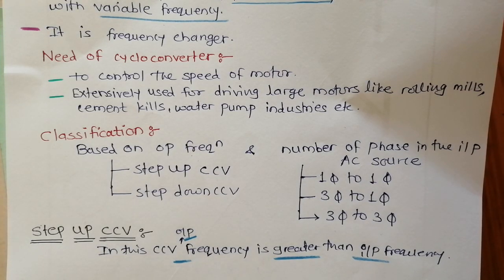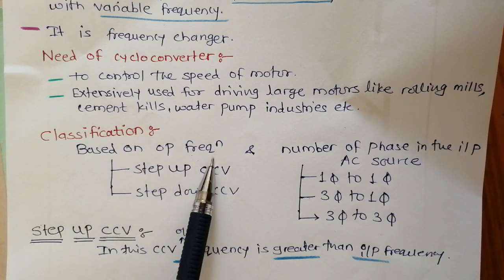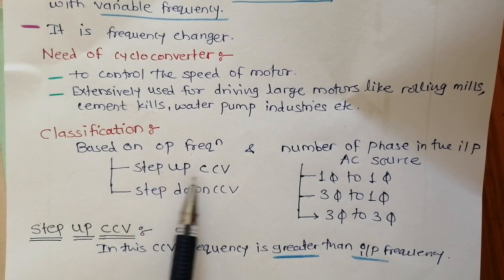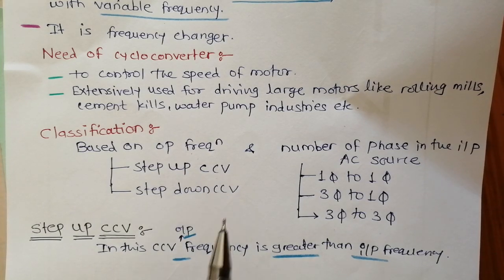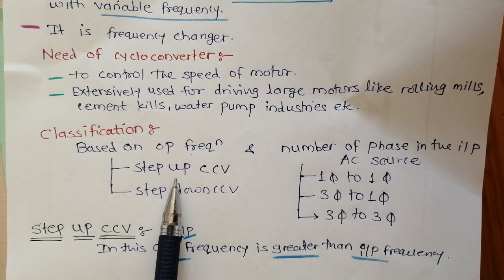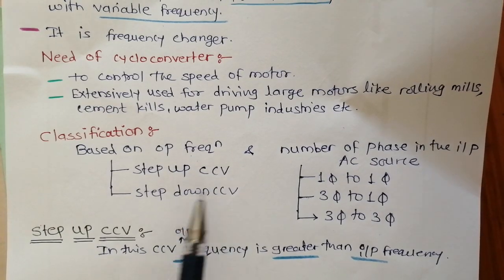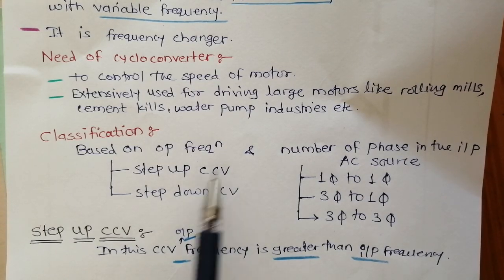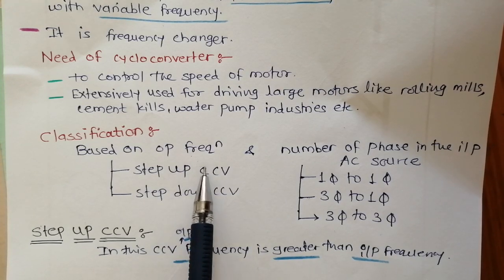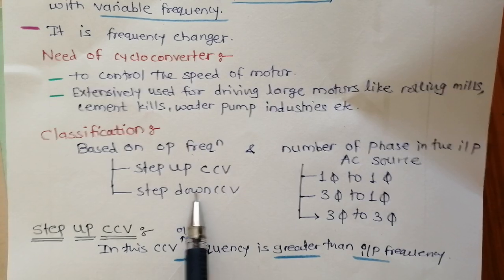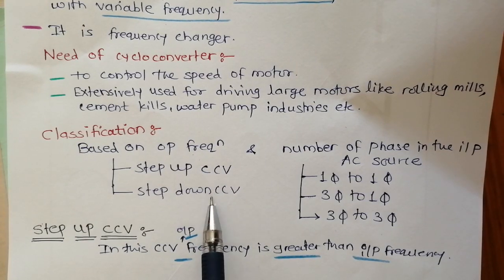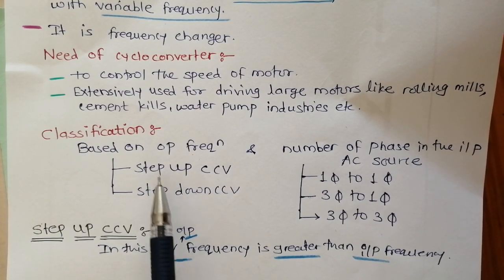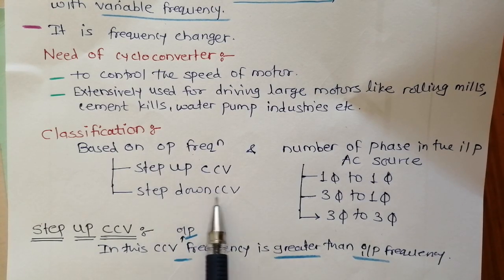In today's video, we will discuss classification based on output frequency, which contains two types: step-up cycloconverter and step-down cycloconverter. In a step-up cycloconverter, the output frequency is higher than the input frequency. In a step-down cycloconverter, the output frequency is less than the input frequency.